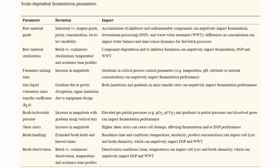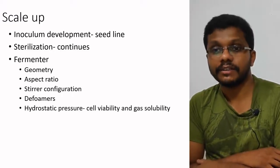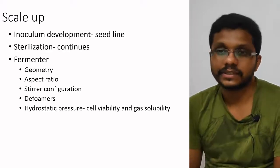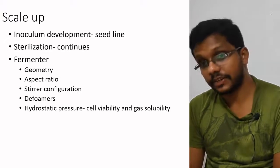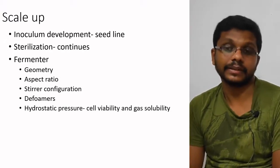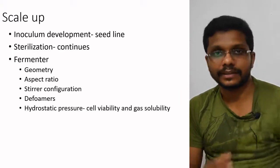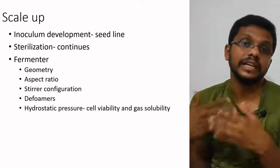High hydrostatic pressure also makes aeration difficult, as more pressure is required to pump oxygen into high-pressure zones. Shear stress from high-power stirrers can kill microorganisms. Broth handling becomes difficult at large volumes, so dedicated pipelines are used. Broth deactivation and wastewater treatment plants must be scaled up accordingly. During scale-up, inoculum development and seed lines must be developed, and sterilization should operate in continuous mode.